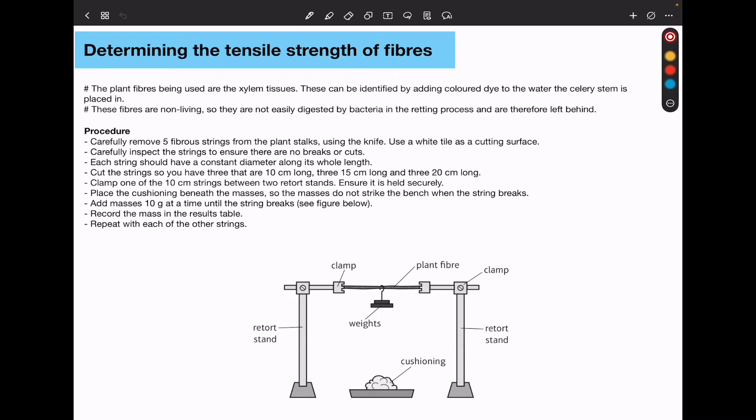In this Core Practical, we're going to be observing plant fibers. These could be xylem tissues. They can be identified by adding colored dyes to the water. The plant celery stem is placed in.